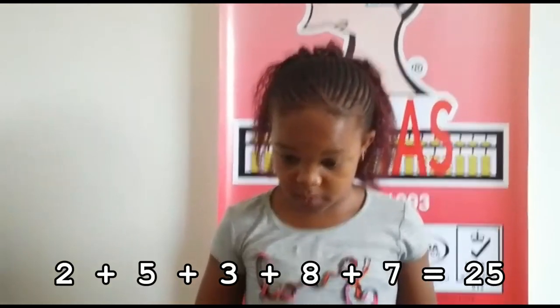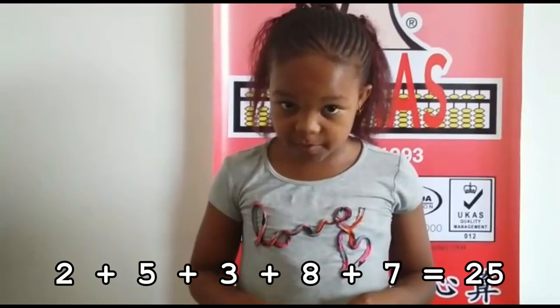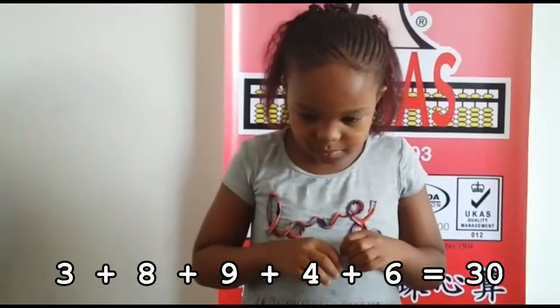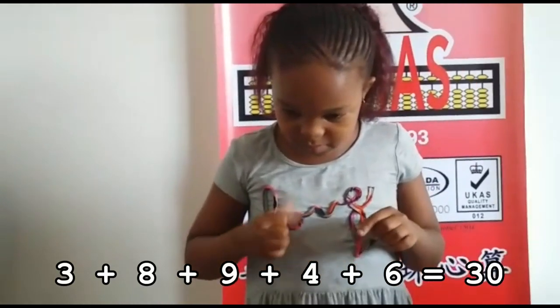One digit five rows, ready. 2 plus 5, 3, 8, 7. That is ready. 3 plus 8, 9, 4, 6.